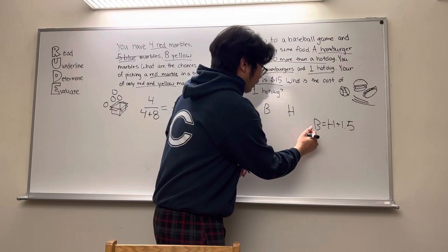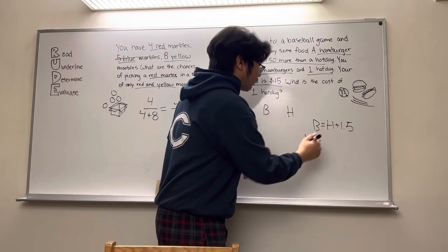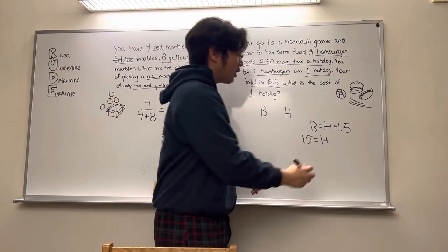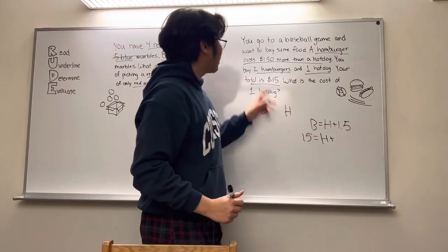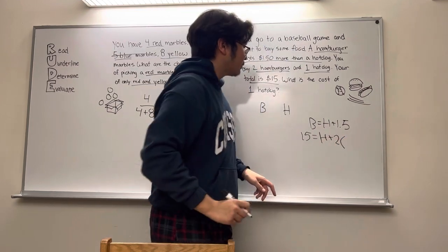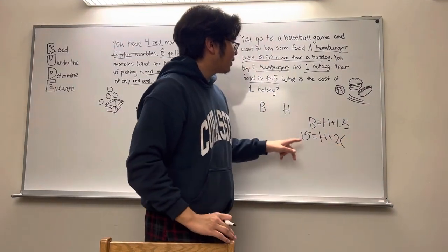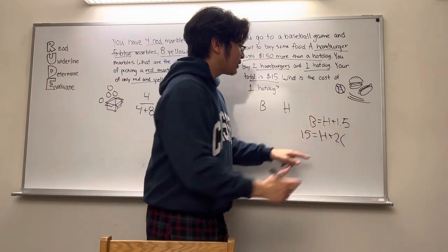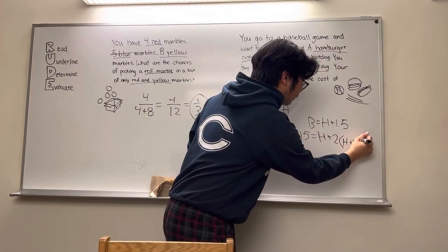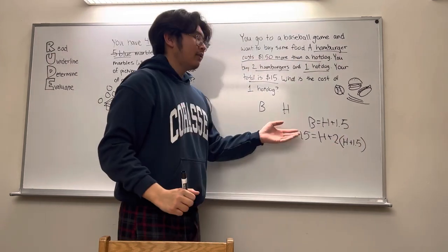And, in order to kind of find the total, we can use this information by creating this equation. So, 15 equals the cost of a hot dog plus, since we're buying two hamburgers, we're going to put two here, and the amount of burgers. But, since we know what b equals, we can just plug this in into b, which is h plus 1.5. And, we have it, the equation.